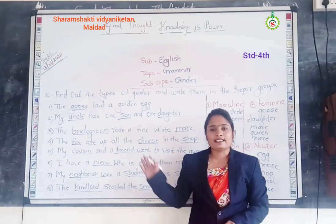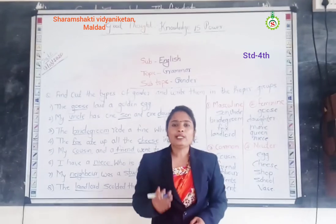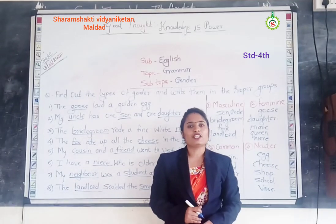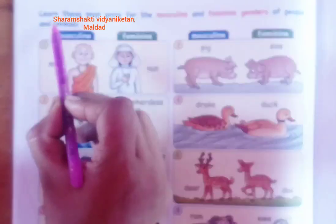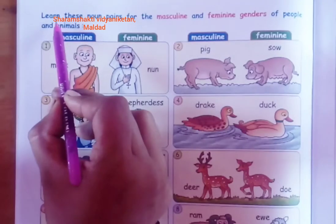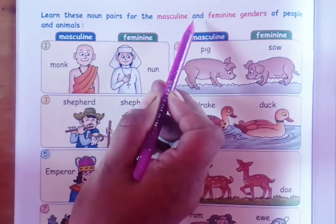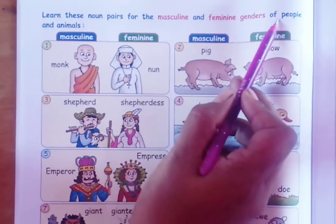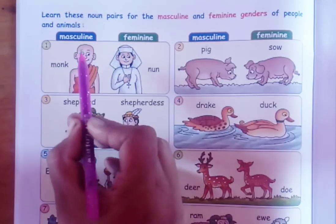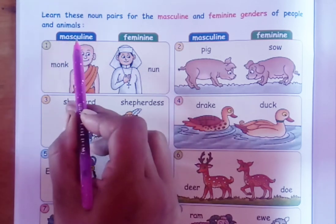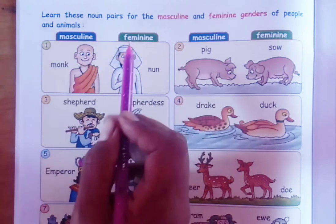I hope you understand these examples of genders. Now you will see more examples of feminine gender and masculine gender. Learn these noun pairs of masculine and feminine gender for people and animals. Here are some examples.